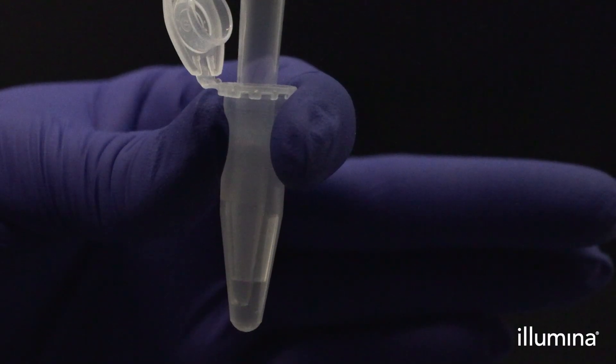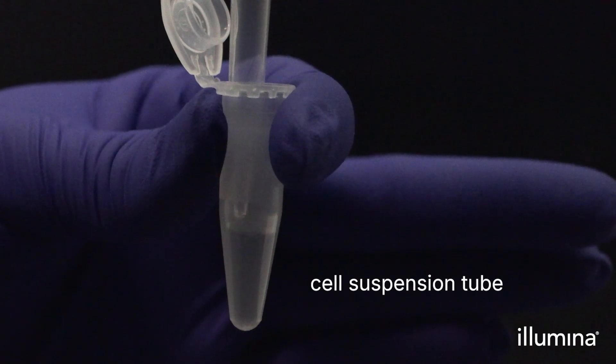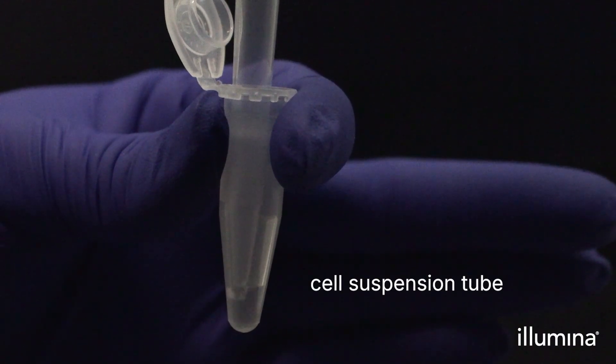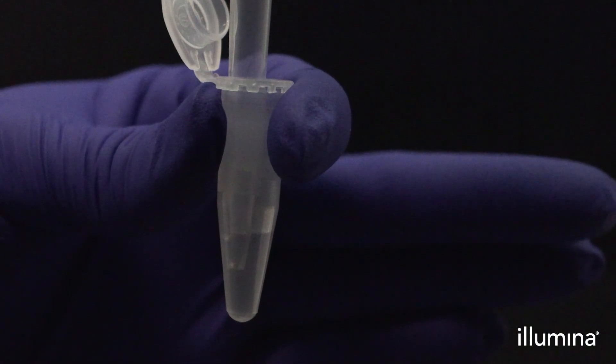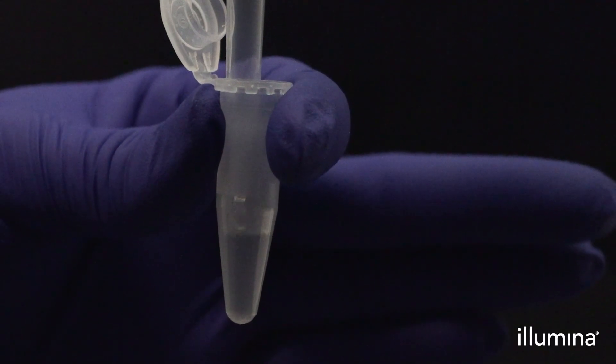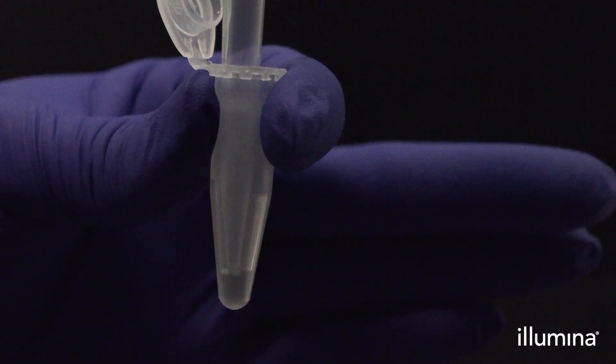First, gently pipette mix your cell or nuclei suspension ten times with a wide-bore P200 pipette tip. The cell or nuclei suspension should be freshly mixed before transferring into the pips to prevent settling from impacting your sample loading.